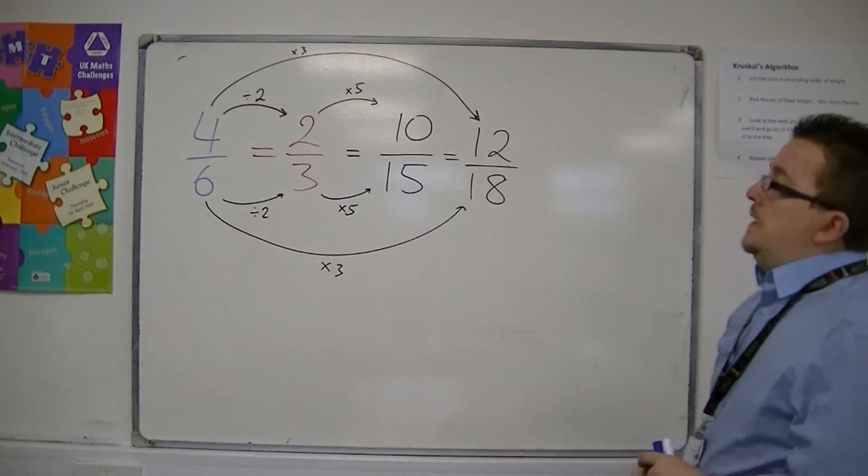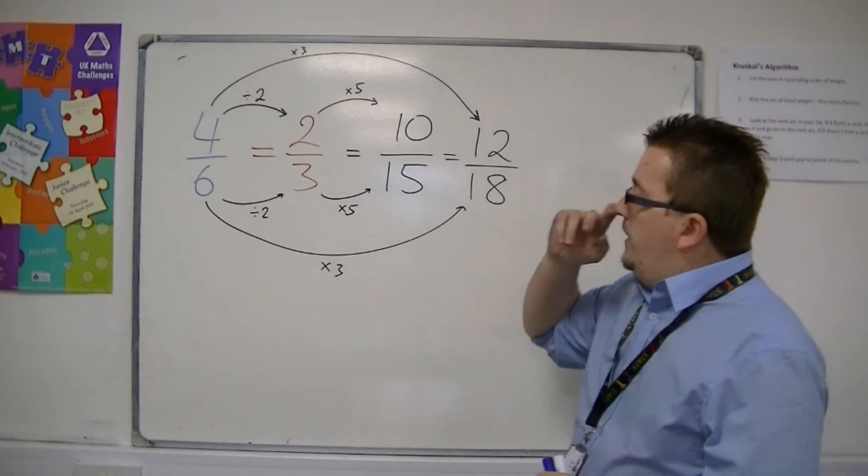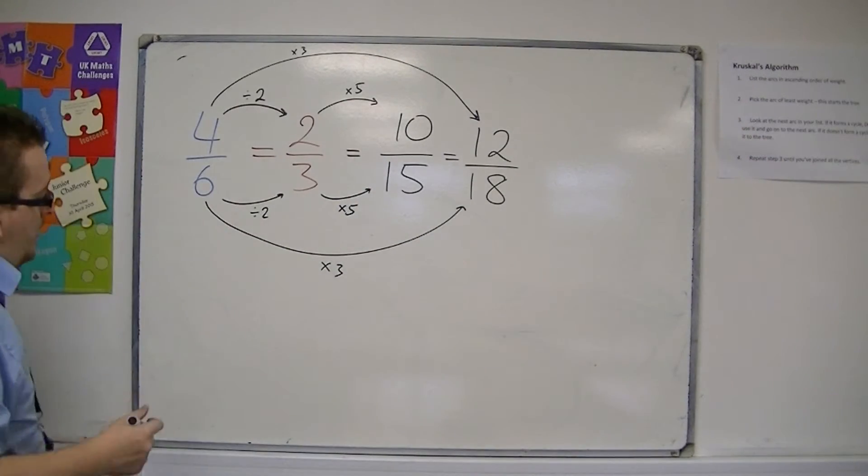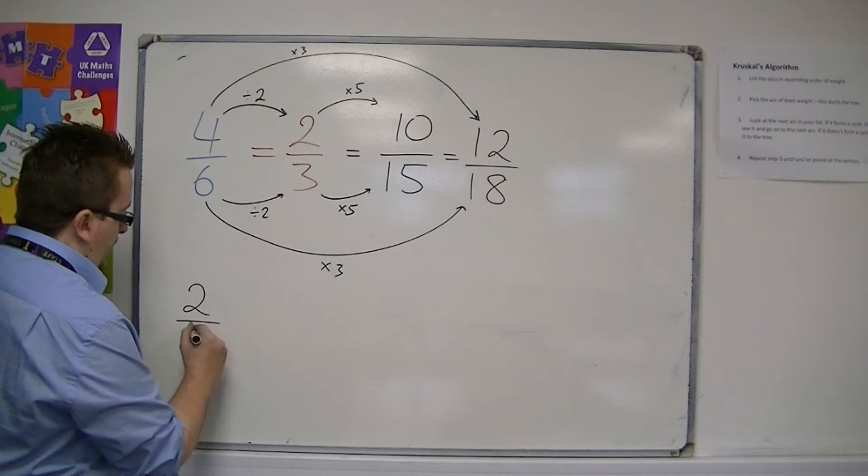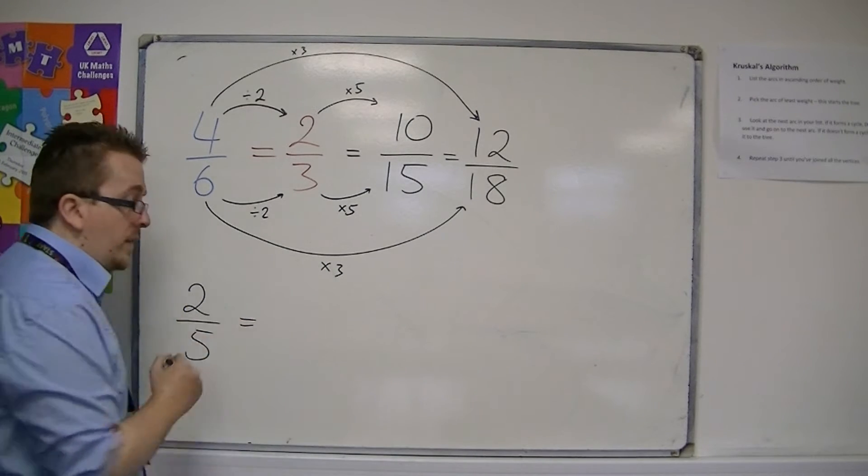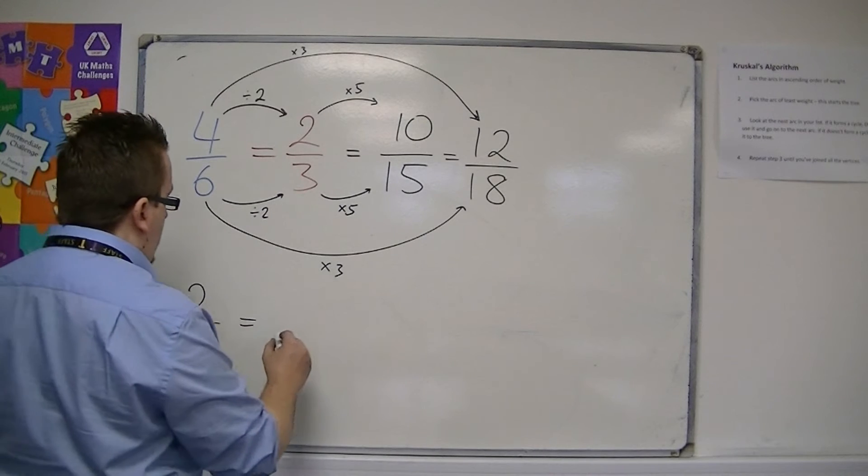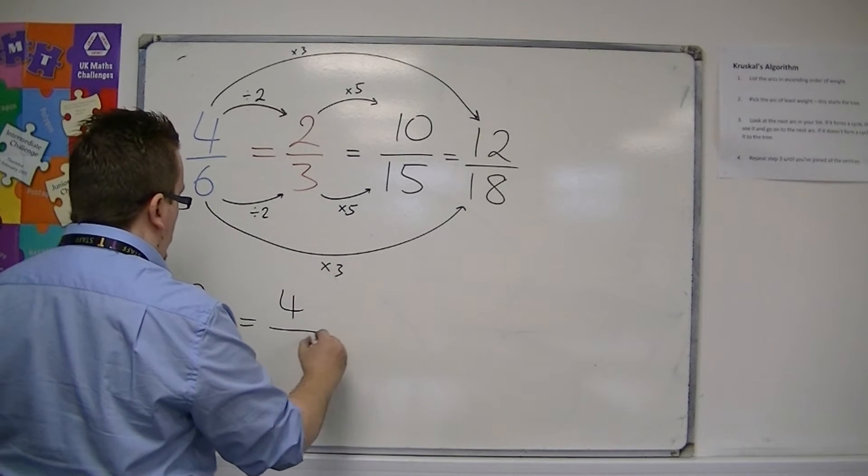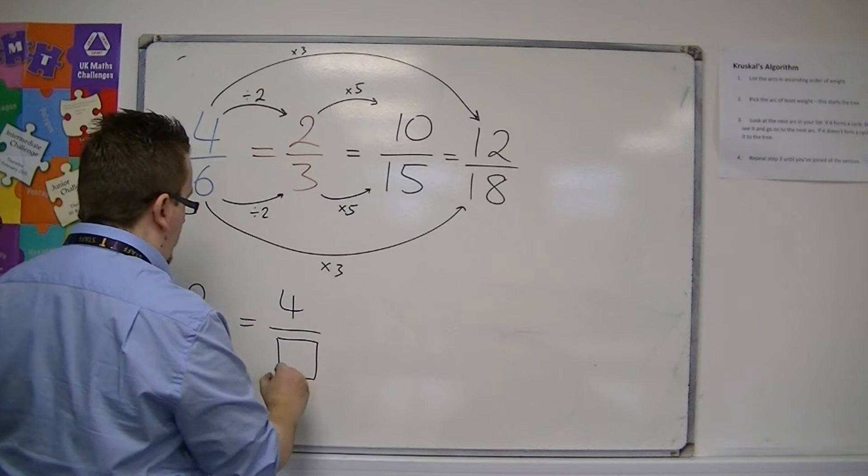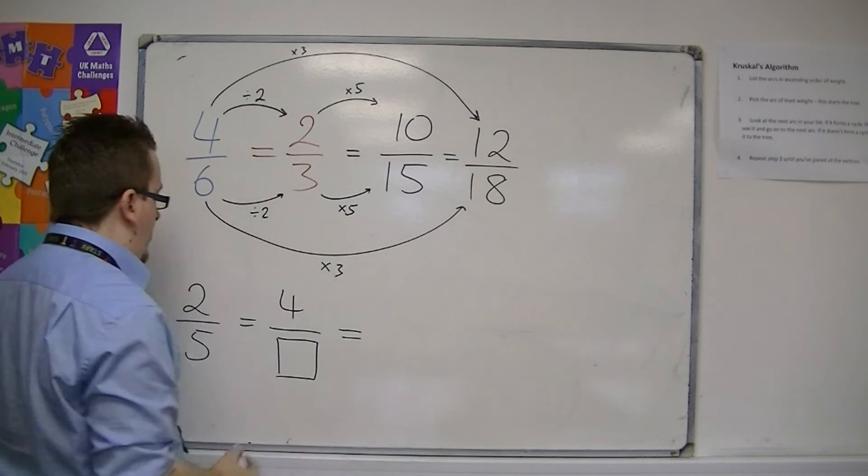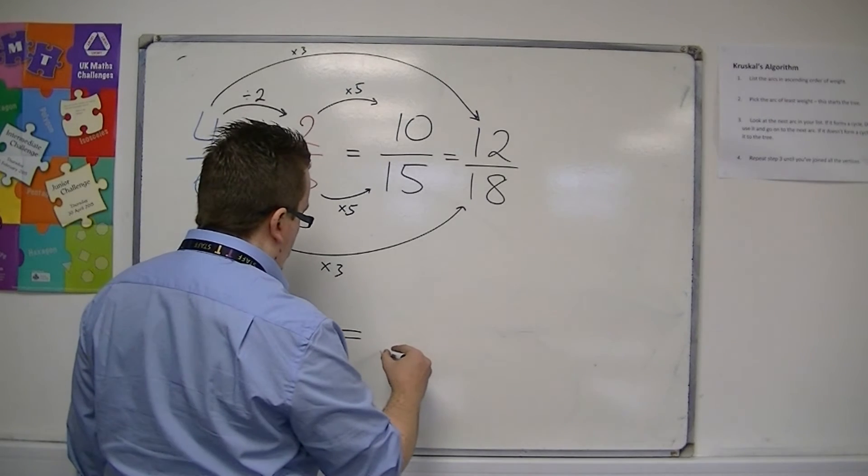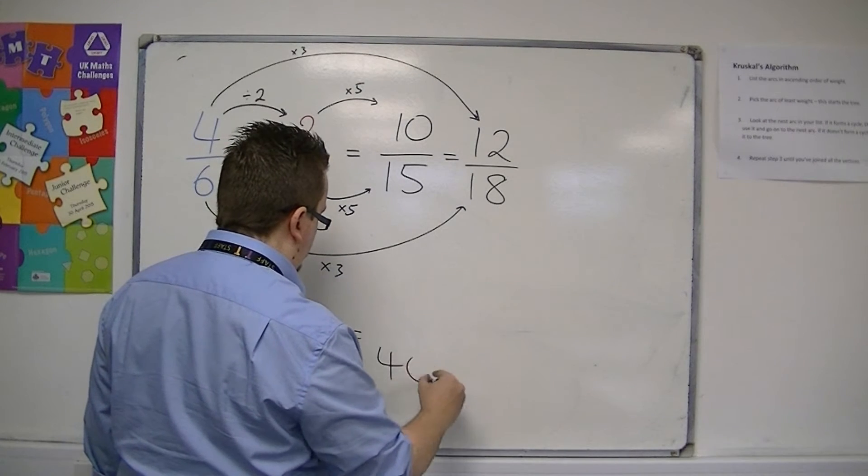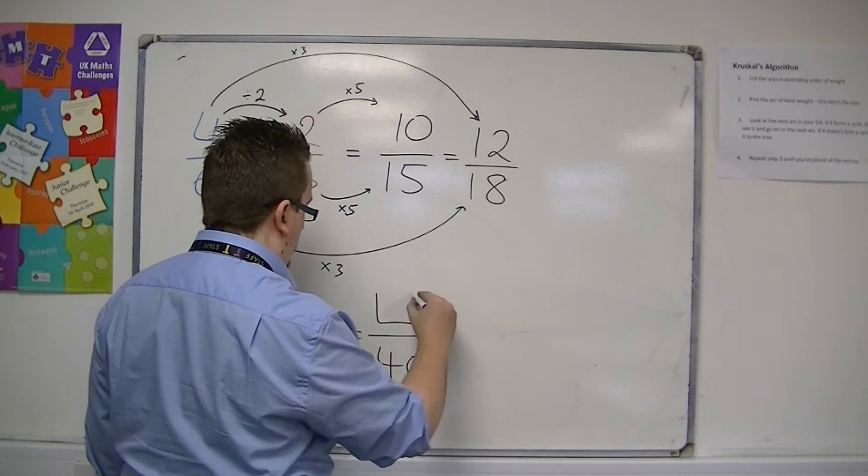You can see that this could potentially lead into a problem like this. We could have the fraction 2/5, for example, and the question might have a gap, a box for you to fill in, and then you could have another box.